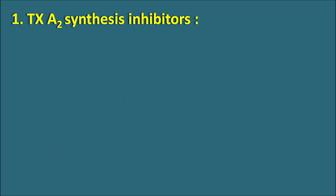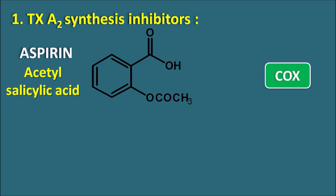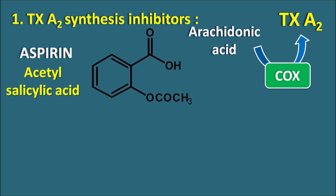The first category is thromboxane A2 synthesis inhibitors, and one well-known drug is aspirin. Aspirin has a structure of salicylic acid with an acetyl substitution — it is acetylsalicylic acid. The main target of aspirin is the COX enzyme, cyclooxygenase. This cyclooxygenase enzyme converts arachidonic acid into thromboxane A2 as well as other prostaglandins. Thromboxane A2 is most important here because it produces platelet aggregation.